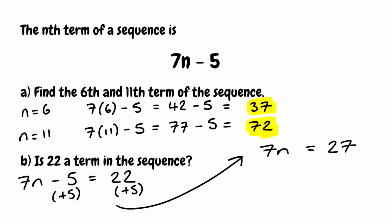Now we've got 7n — 7 multiplied by n — so I'm going to divide both sides by 7. 7n divided by 7 gives us n, and we now have 27 divided by 7. Writing that as a fraction: 27 over 7. Well, 27 isn't in the 7 times table, so we're not going to end up with an integer — we're going to end up with a decimal.